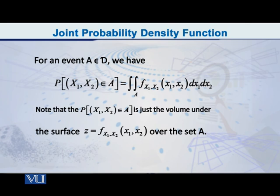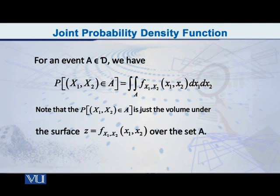In the univariate case, we always say area under the curve. But now, because there are two variables, we are talking about the volume under the surface which is above the x1, x2 floor. If I had named the variables x and y, I would have said the xy floor and the volume above it — not the area, but the volume. And the total volume has to be equal to one, because the total probability is always equal to one.